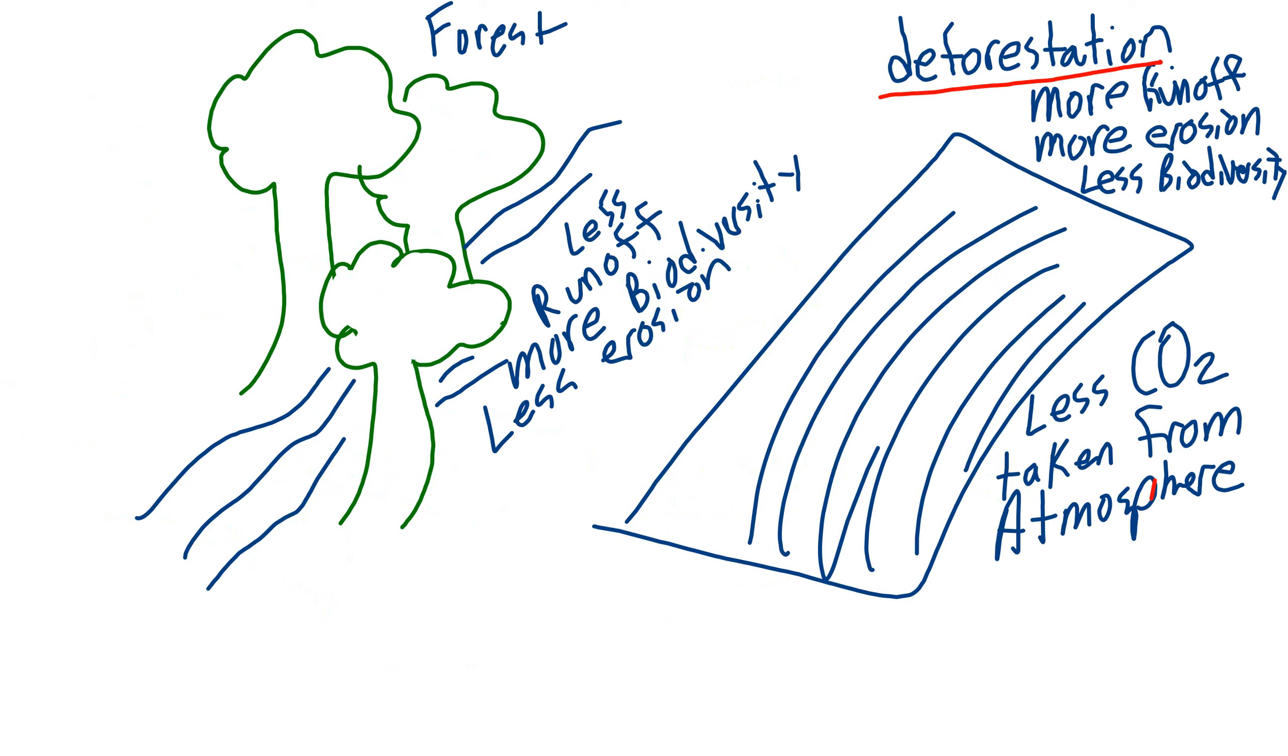All right. How does deforestation affect runoff and erosion? Well, when we have trees and stuff, there's less runoff because the trees and the shrubs and the grass slow down the runoff. And it has more time to infiltrate into the soil and the rock layers. When we have trees, we're going to have more biodiversity because we have trees, shrubs, squirrels, birds, deer, and all sorts of stuff.